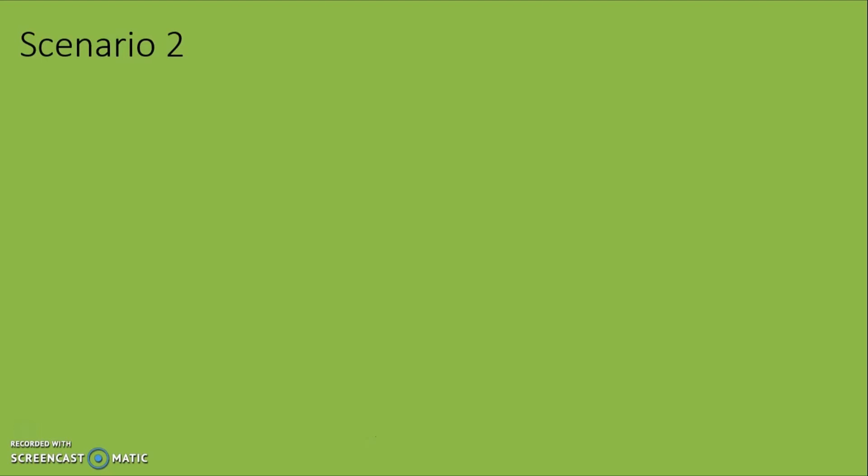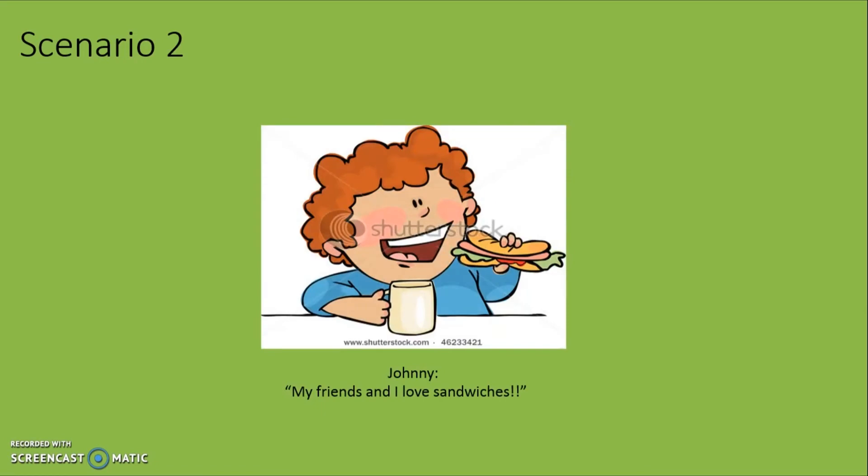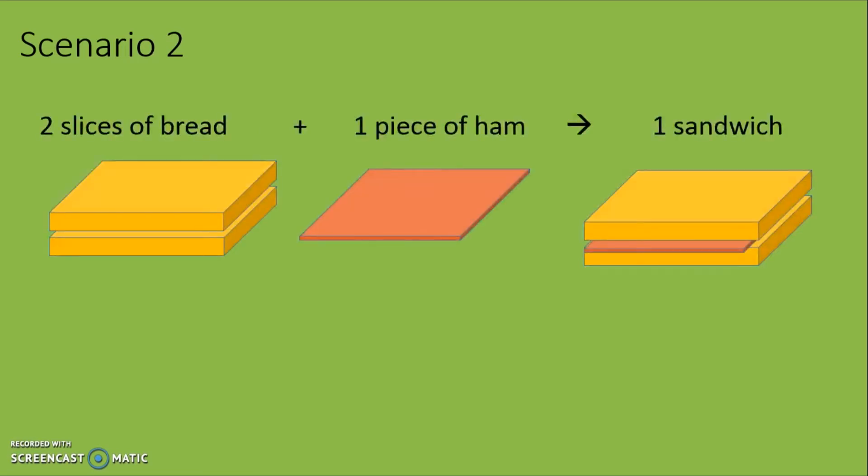What do I mean by this? Now let's take an example. Say for example, Johnny wanted to make sandwiches for himself and his friends in school one day. In order to make one sandwich, he requires two slices of bread and one piece of ham. In chemistry perspective, the slice of bread and ham will be the reactants, while the sandwich will be the product. Also, the ratio of the bread to ham to product will be 2 is to 1 is to 1.